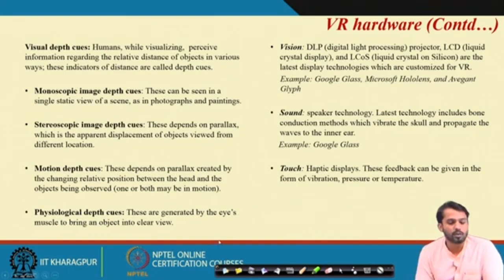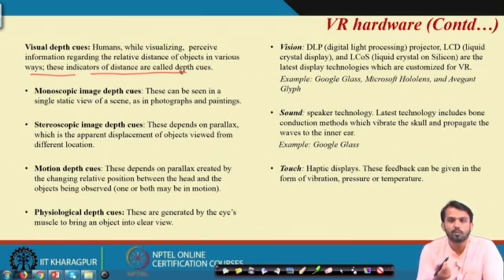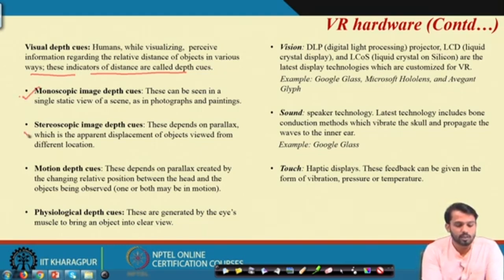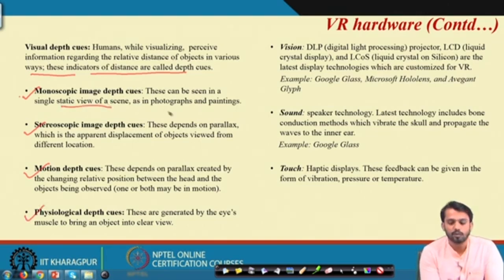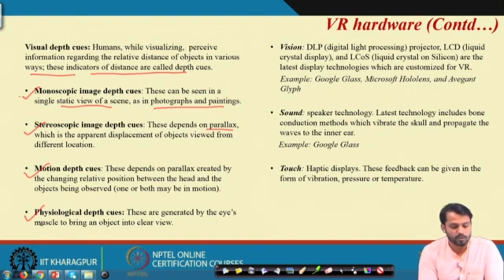Let us see what visual depth cues are. Humans perceive information regarding the relative distance of objects in various ways, and these indicators of distance are called depth cues. There are four types of visual depth cues: monoscopic, stereoscopic, motion depth cues, and physiological depth cues. Monoscopic depth cues are related to the static view of a scene, as in photographs and paintings. Stereoscopic depth cues depend on parallax — the apparent displacement of an object viewed from different locations. Motion depth cues depend on the parallax created by the changing relative position of the head and the objects being observed. Physiological depth cues are generated by the eye muscles to bring an object into clear view.